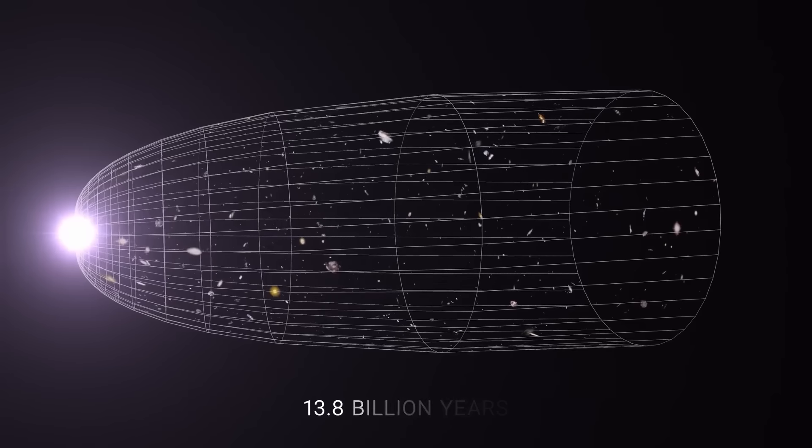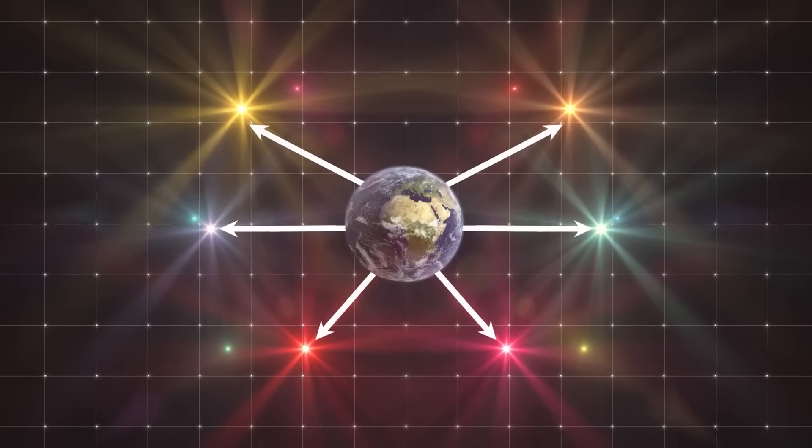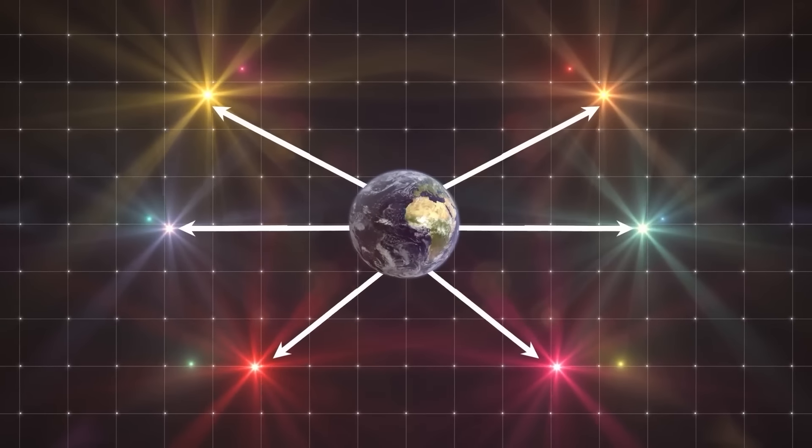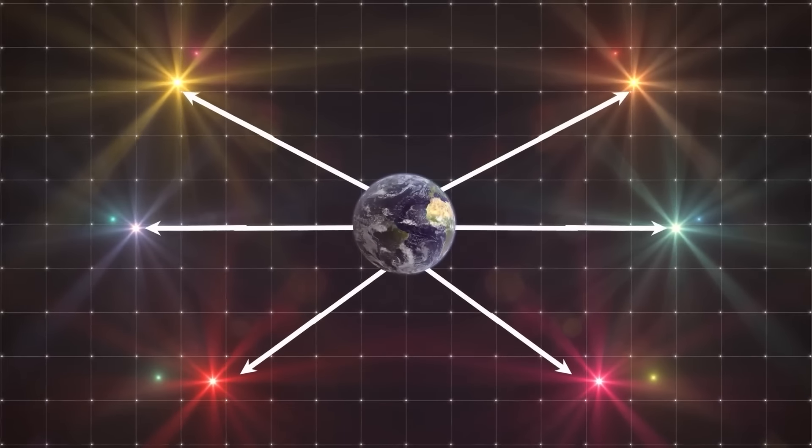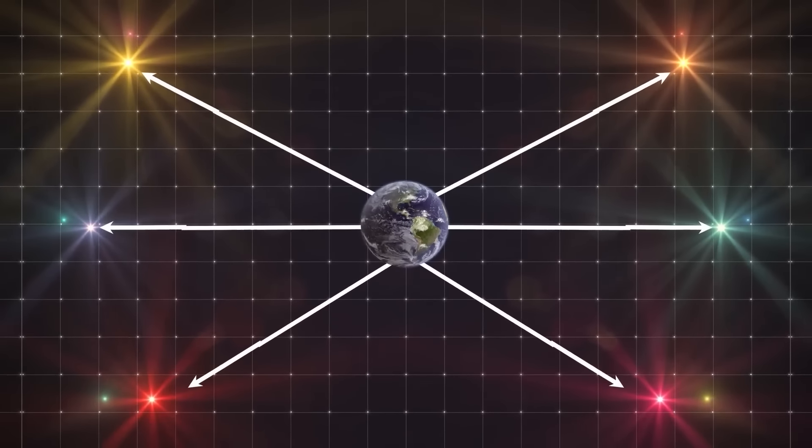Cosmologists estimate that the farthest light we can detect has traveled about 45 to 47 billion light-years from its source due to the universe's expansion over time. This figure results in an observable universe diameter of about 93 billion light-years.